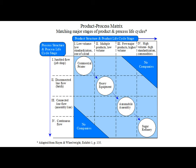Similarly, there are regions where no companies exist — for example, low volume, one-of-a-kind products combined with continuous flow. Such an example does not exist. Likewise, a job shop operation process combined with high volume and high standardization commodities is also not found in existence. So this is the product-process matrix.